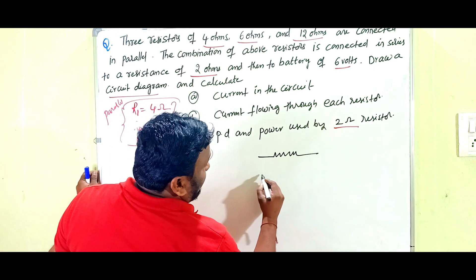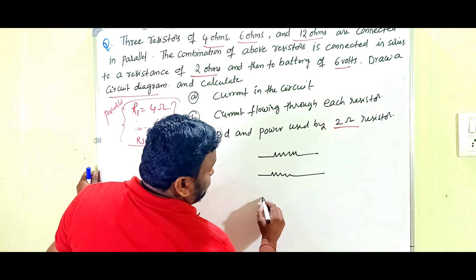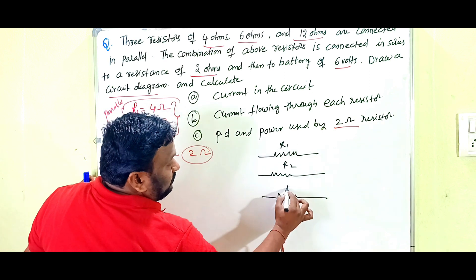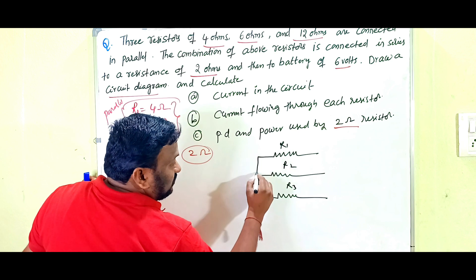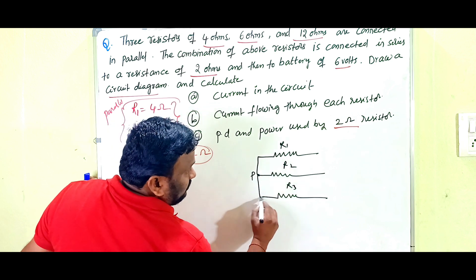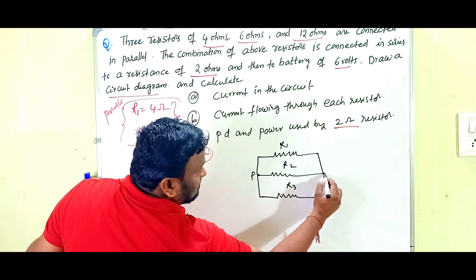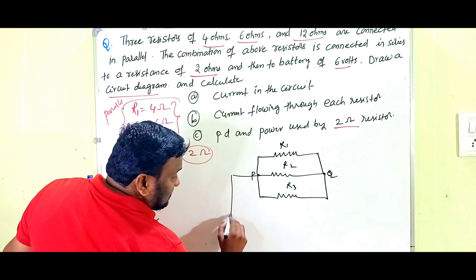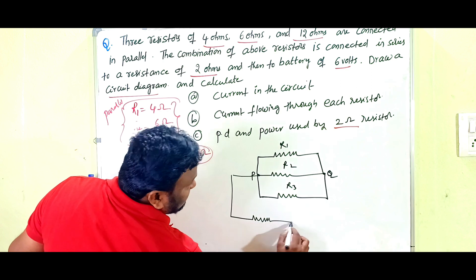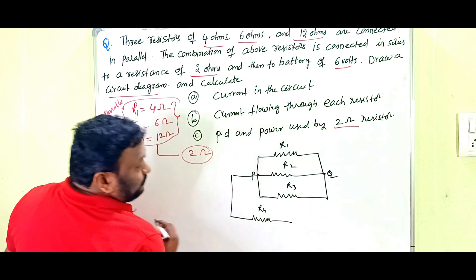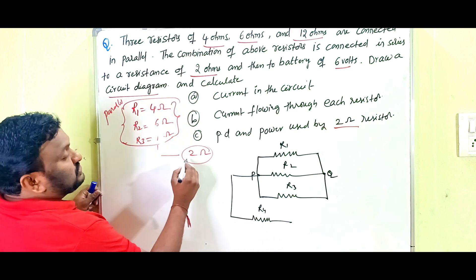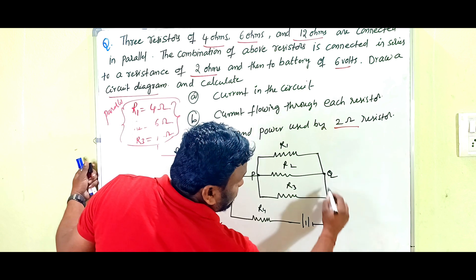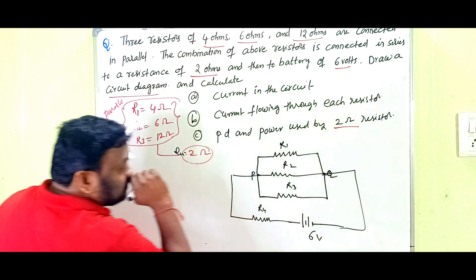In the diagram, R1, R2, and R3 are drawn in parallel — their first ends are connected to point P and their second ends to another point. One more resistor, R4, which is 2 ohms, is connected in series, and that is connected to the battery of 6 volts.